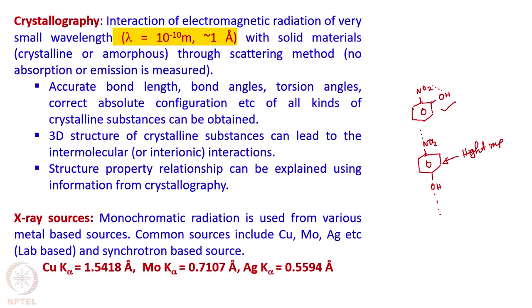For this purpose, we need a particular type of X-ray source. What we need is a monochromatic radiation from various metal-based sources. Common sources include copper, molybdenum, silver, etc. — these are lab-based sources — and synchrotron-based sources. The Kα radiation from copper is about 1.54 Ångströms. When we talk about molybdenum Kα, it is 0.71 Ångströms, and when we use silver Kα, the wavelength is 0.55 Ångströms. These wavelengths are highly significant, and the choice of wavelength is very important for the experiment we are going to do.